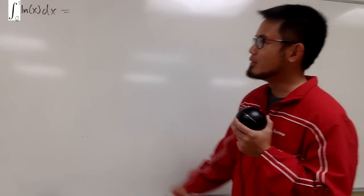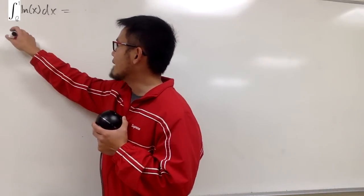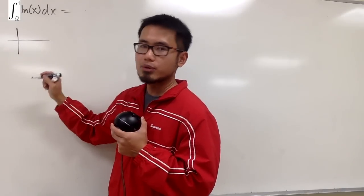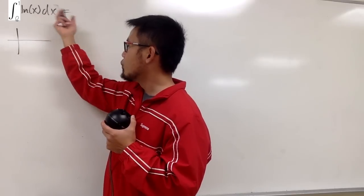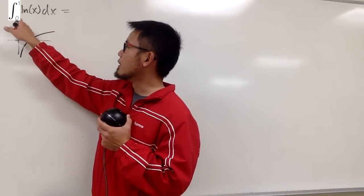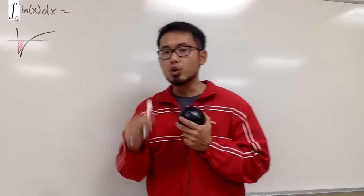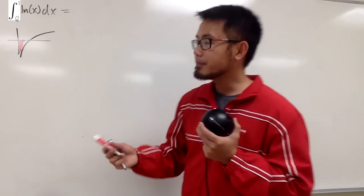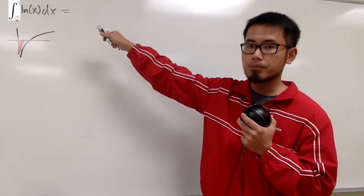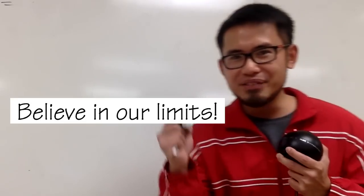First of all, we have to notice that this is in fact an improper integral. If you look at the graph of ln(x), when x is approaching 0+, the function goes straight down. When x equals 1, we have ln(1) which is 0. This integral goes from 0 to 1, and the main question is, do we have a finite area for this region? This is how we deal with improper integrals: know our integrations and believe in our limits.